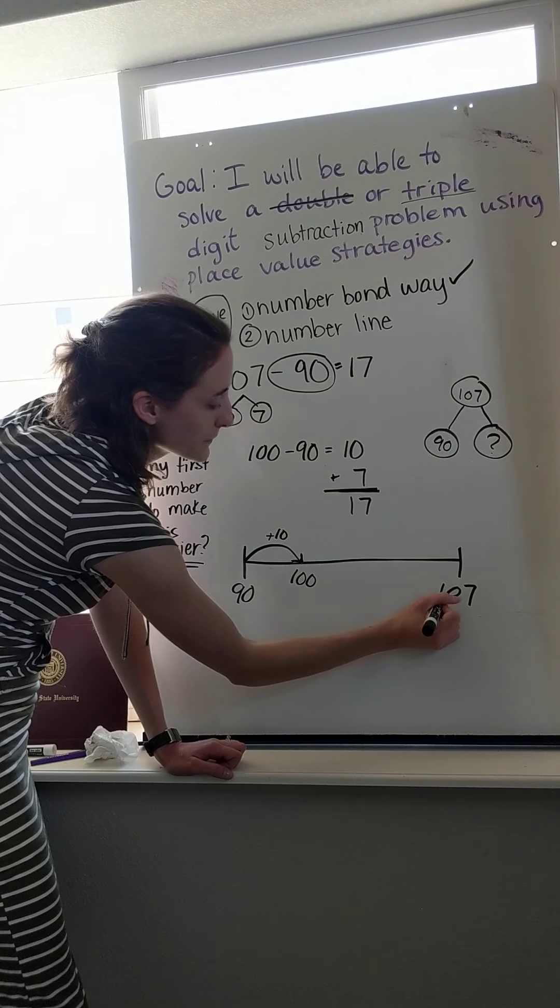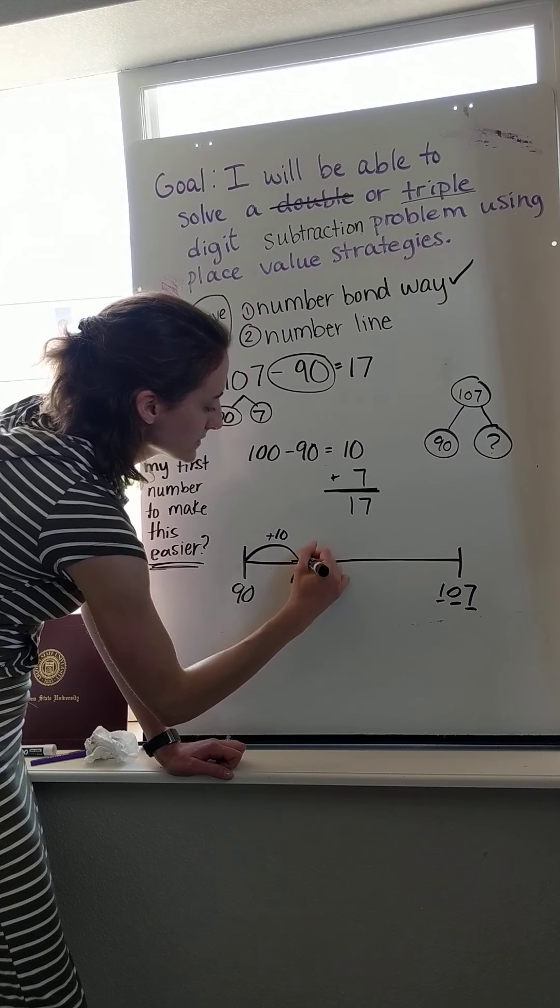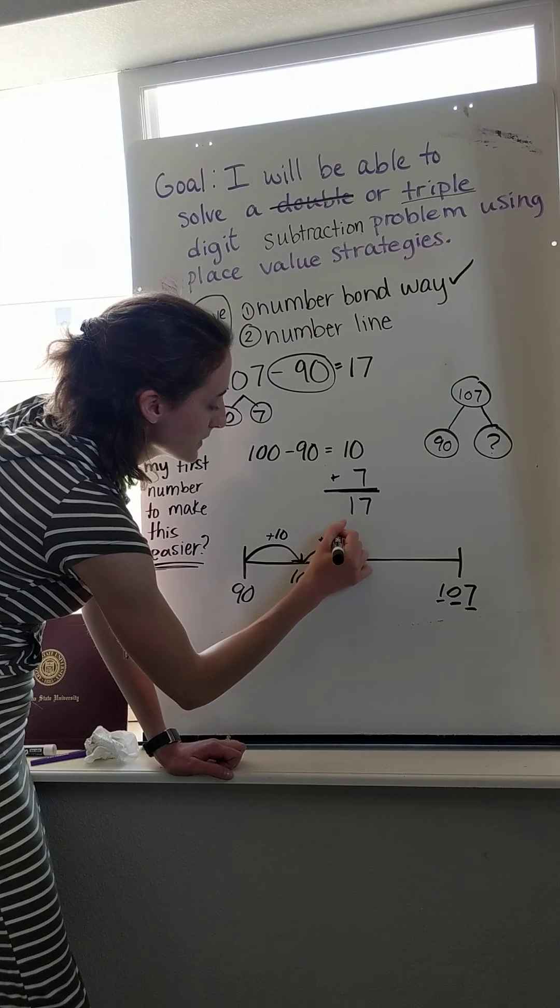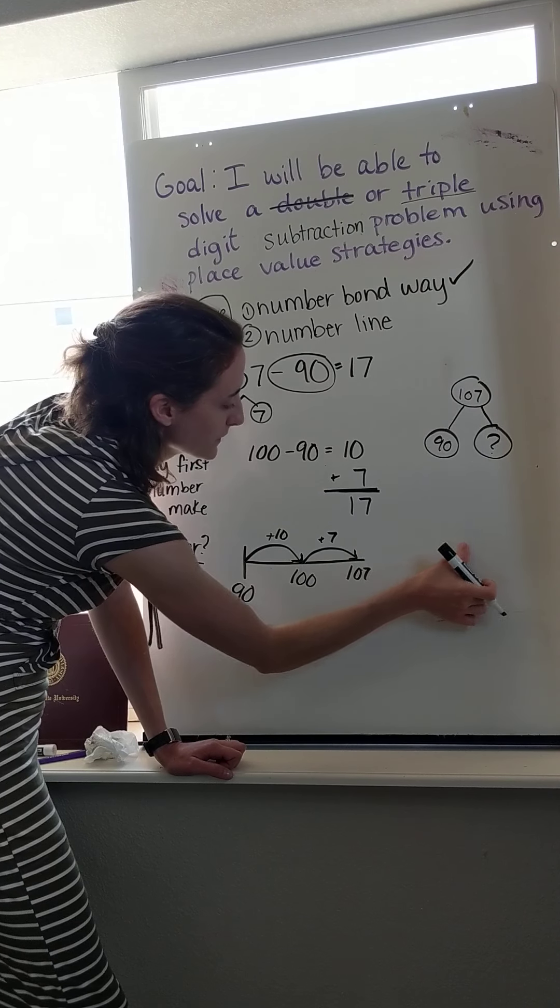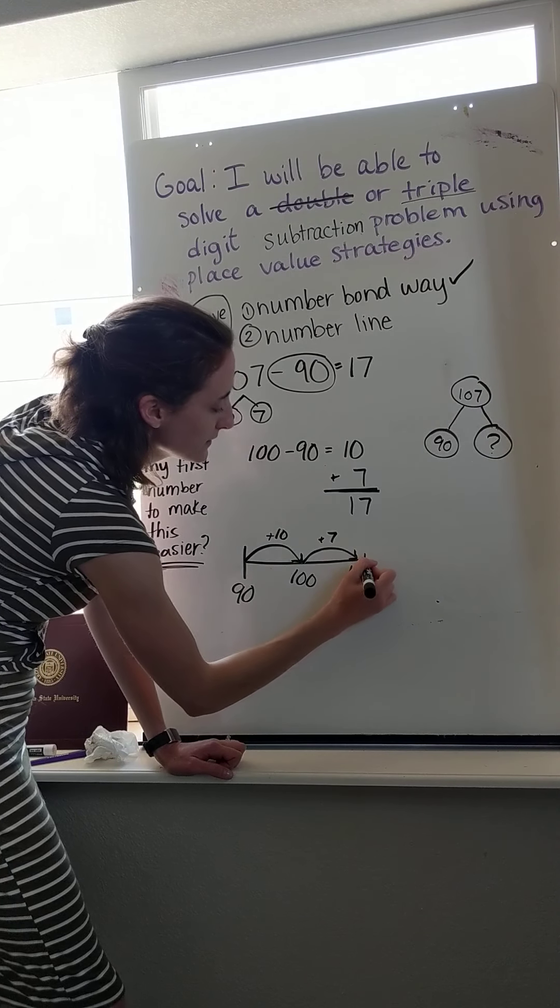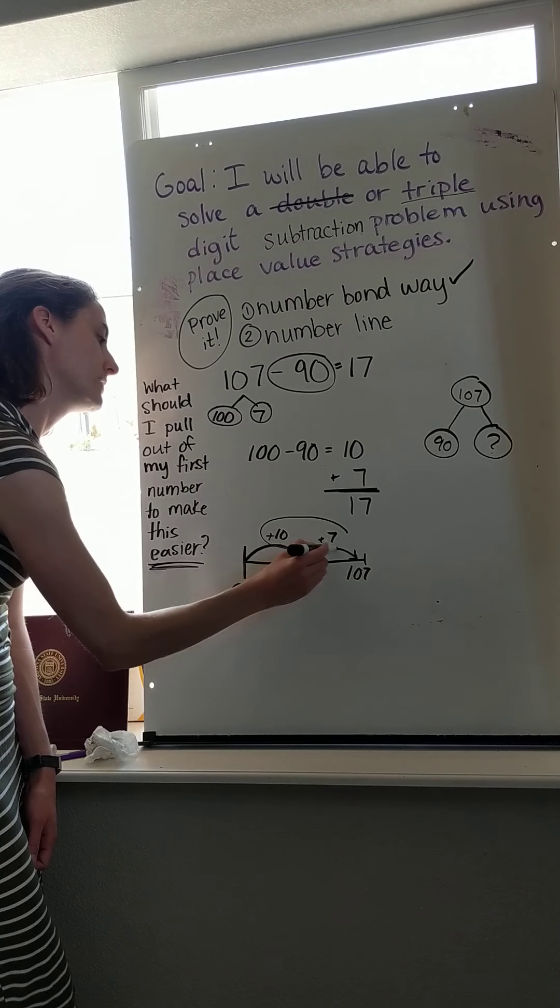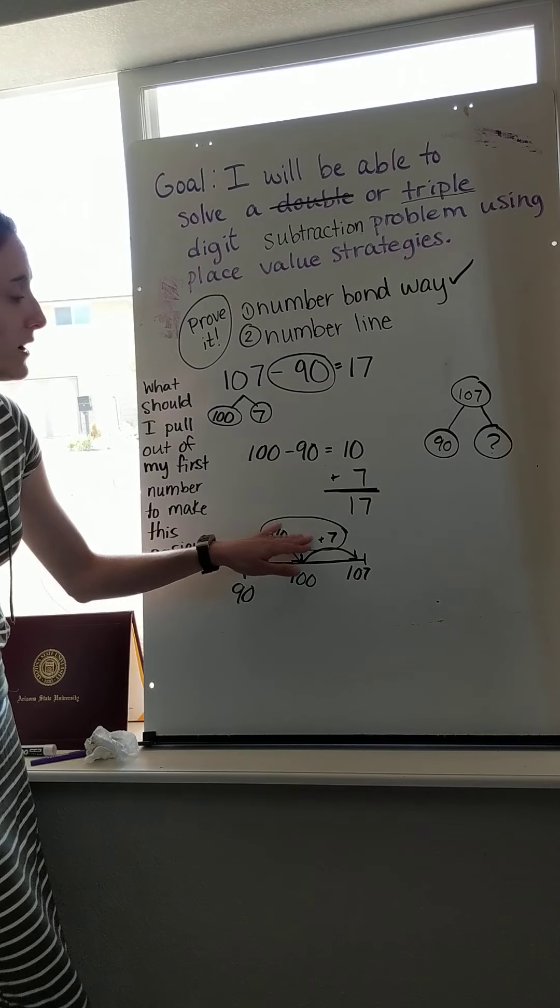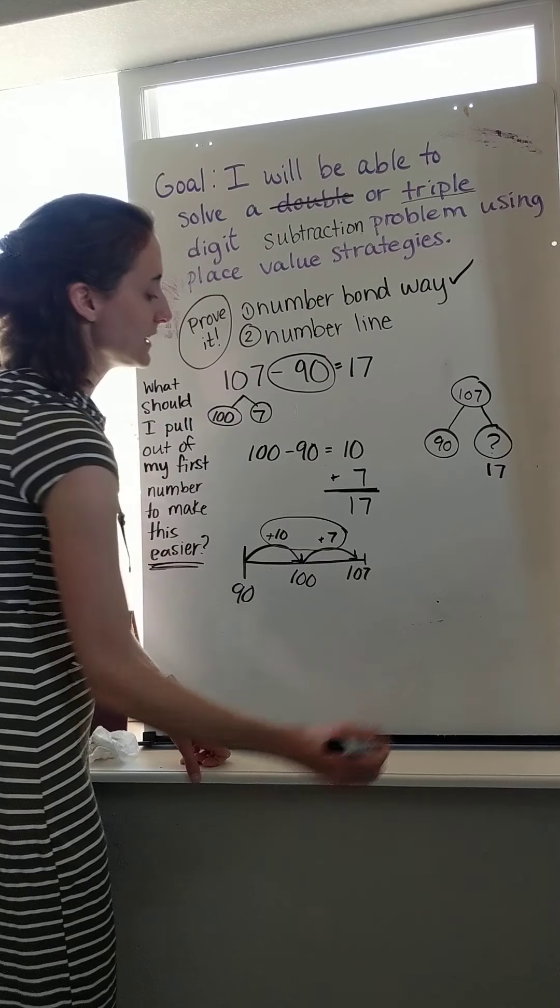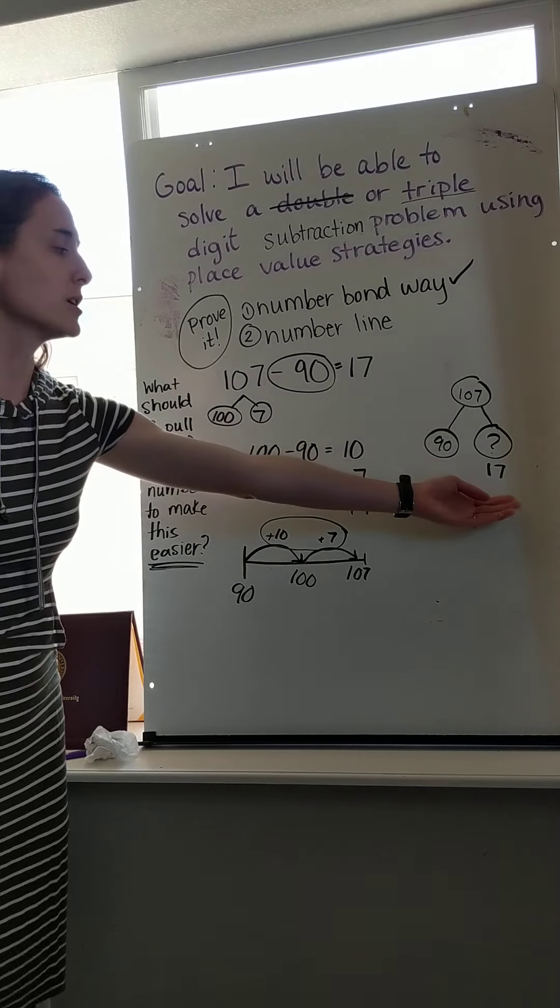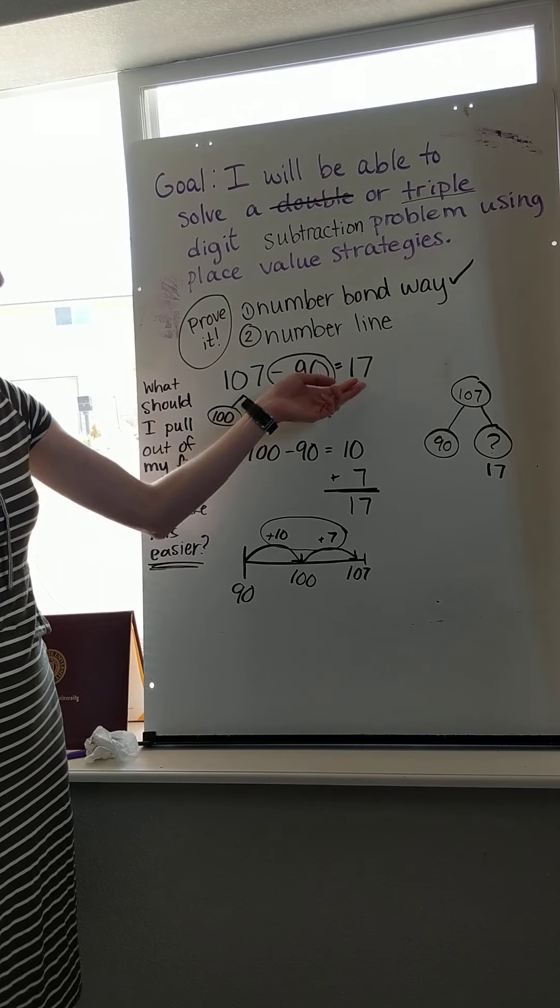And then I think, well, I'm already at 100. I don't need any tens. I just need 7 ones. So my next hop is going to be plus 7 ones. That makes 107. So the missing part was 10 and 7, which makes 17. So now I'm sure that 107 minus 90 makes 17.